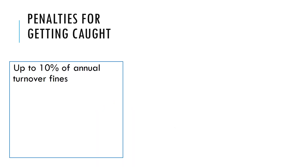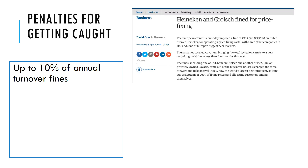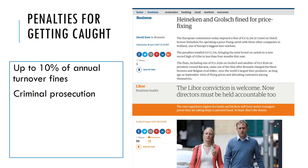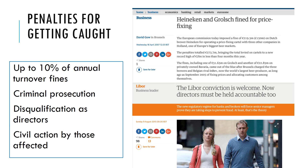What might be the penalties for getting caught? Businesses can be fined up to 10% of their annual turnover or revenue. Here's an example of two businesses that were fined for price fixing. Workers can also face criminal prosecution for engaging in activities that are against competition law. You can be disqualified from being a director of a business if you engage in anti-competitive practices. And there can also be civil action taken by those affected — effectively, you can be sued by customers if you collude with another business to exploit them.